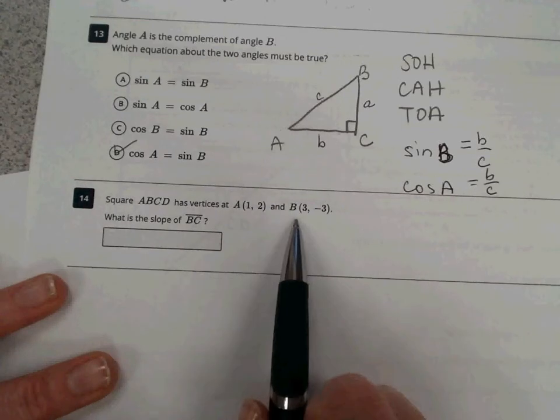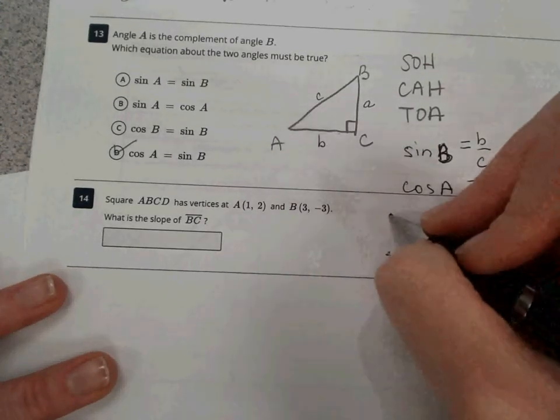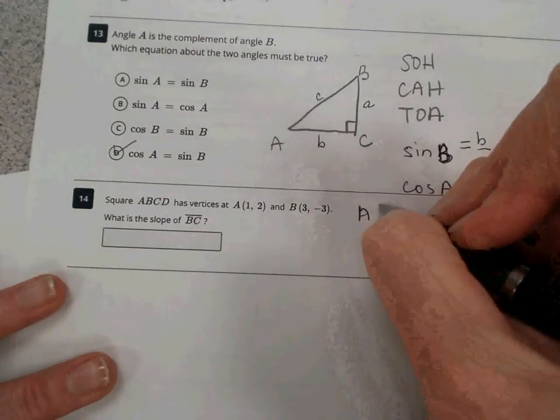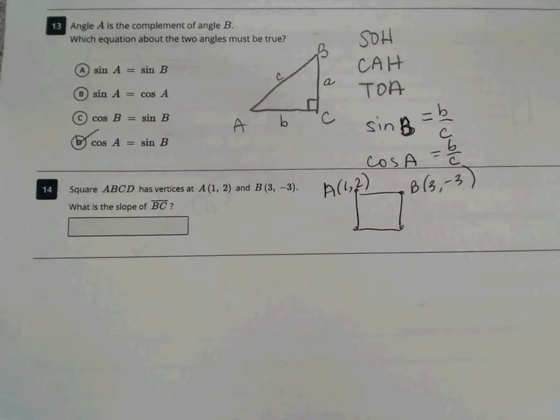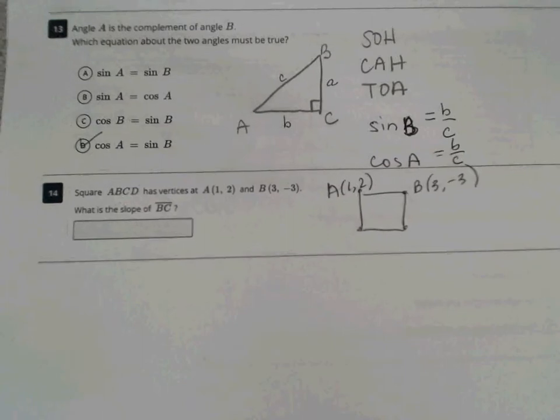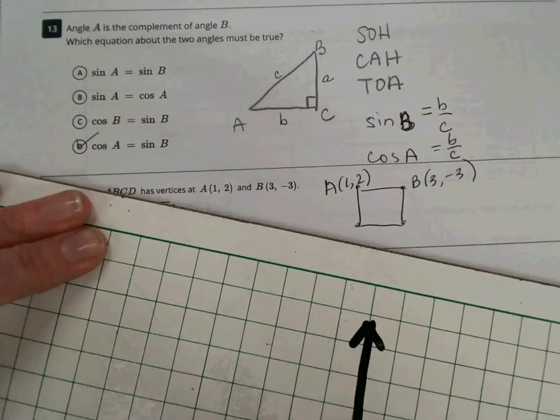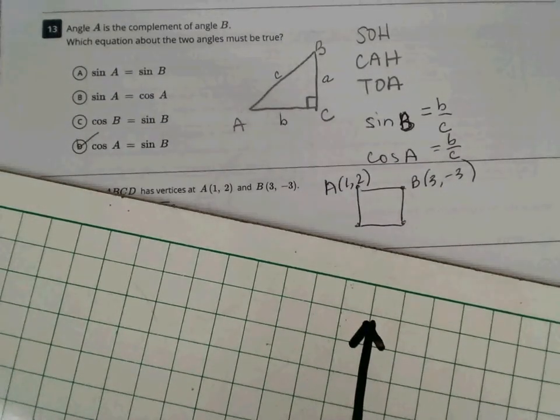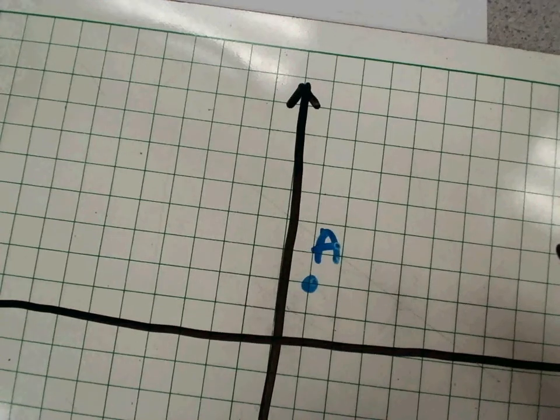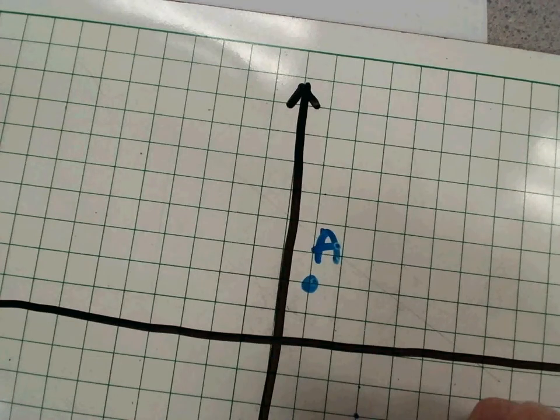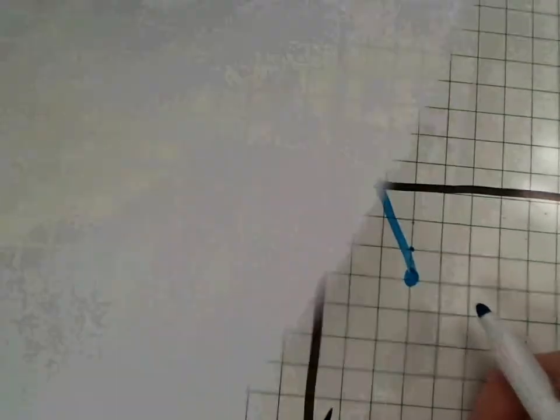So square A, B, C, D has vertices at A, which is 1, 2, and B, which is 3, negative 3. What is the slope of B, C? So literally, we're talking about a square here. So I don't need to draw this on graph paper necessarily. Let's just go ahead and do that real quick. Get out my graph grid. You can use Desmos. And this is just mainly for the sake of teaching. You can do this if it helps you. So I have 1, 2 as one of my vertices. And 3, negative 3. That is one side of my square.